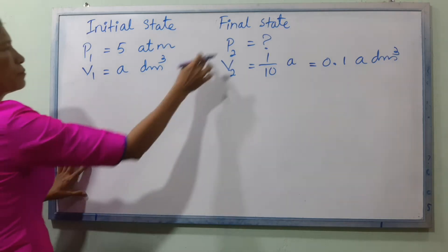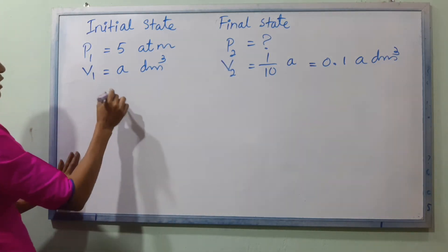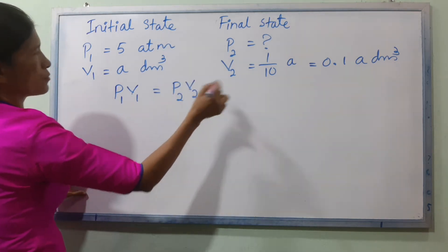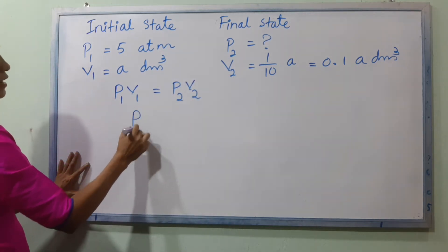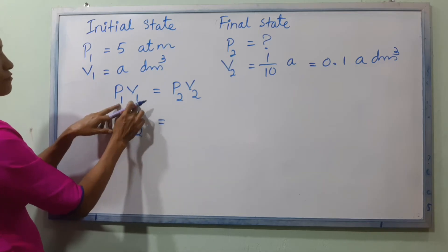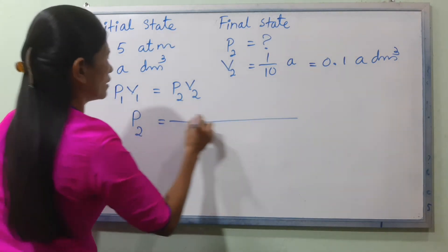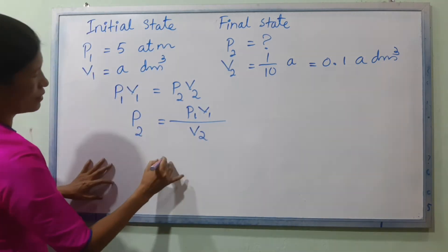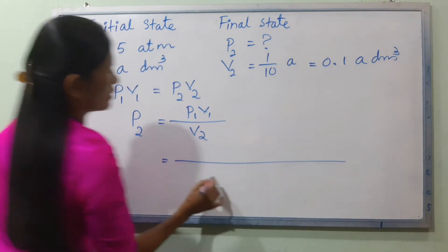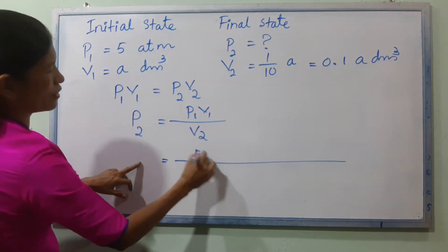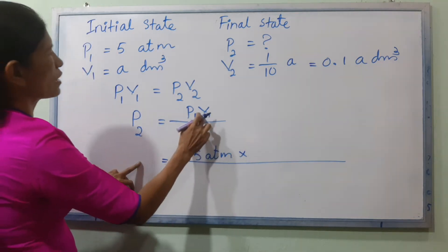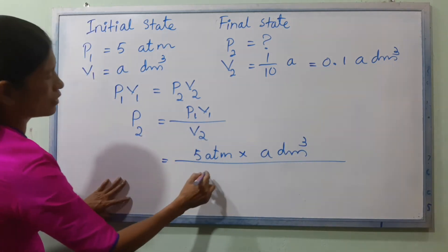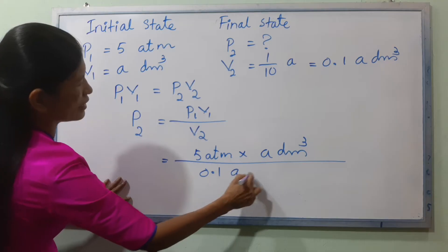According to Boyle's Law: P1 × V1 = P2 × V2. Then P2 = P1V1 / V2. P1 is 5 ATM, V1 is 1 dm³, and V2 is equal to 0.1 dm³.